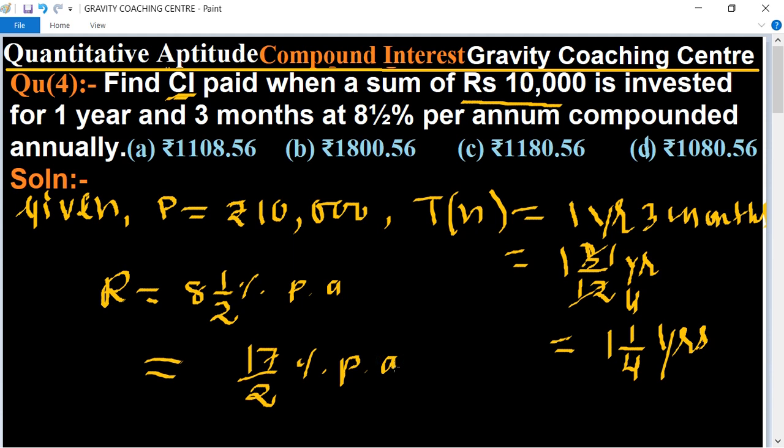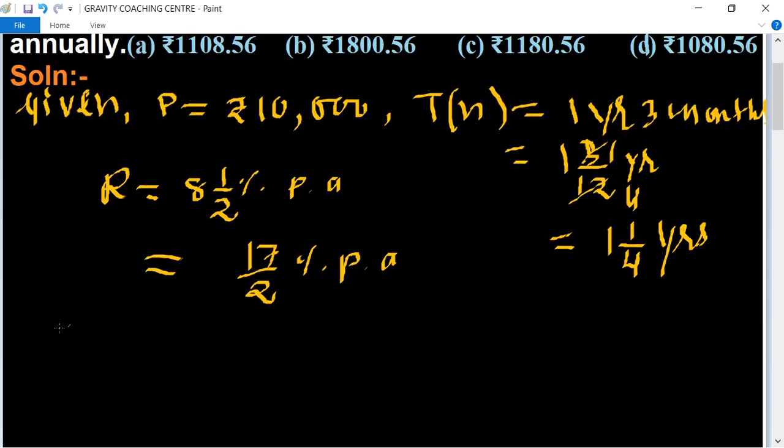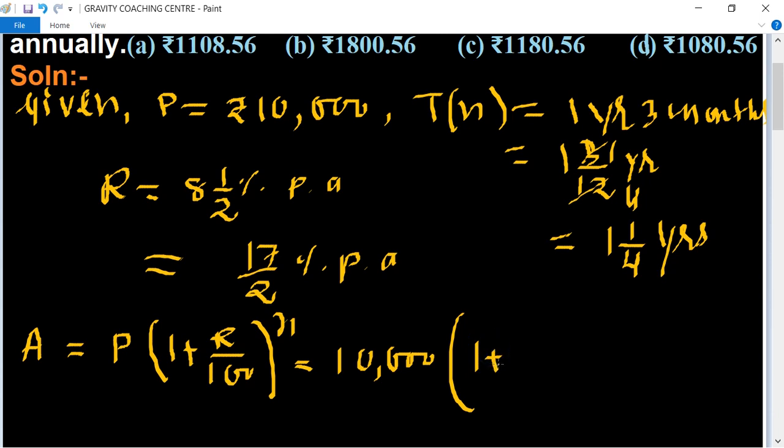So first we find the amount. Its formula is A = P(1 + r/100)^n. Principal = 10,000. Rate of interest is 17/2, so: 17/(2×100) for the first year, and one plus...